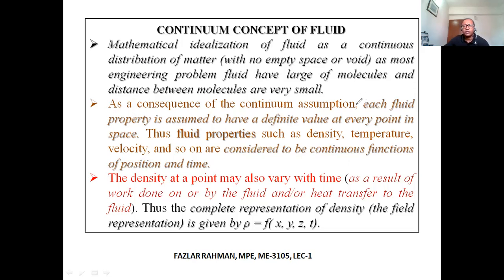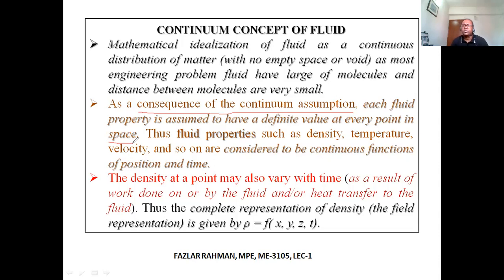As a consequence of the continuum assumption, fluid properties are assumed to have a definite value at every point in space. For example, just by the window, fluid has density and temperature. In another corner of the room with a light bulb, the temperature of the fluid will be different, and velocity and density might also be different. So fluid properties such as density, temperature, and velocity are considered to be continuous functions of position and time.